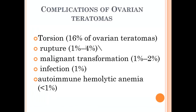Complications of ovarian teratoma: the most common is torsion. We have seen multiple cases with torsion on top of ovarian teratoma, so be aware of abdominal pain potentially representing torsion overlying a teratoma — this occurs in 16% of ovarian teratomas. Rupture occurs in 1–4%, malignant transformation in 1–2%, infection is very rare, and autoimmune hemolytic anemia occurs in less than 1% of cases.